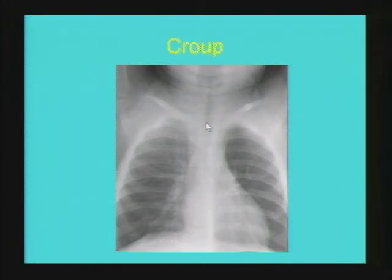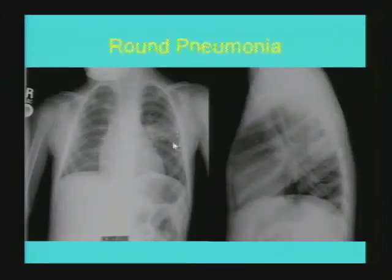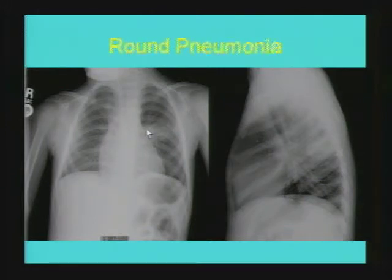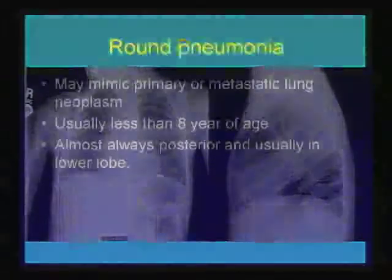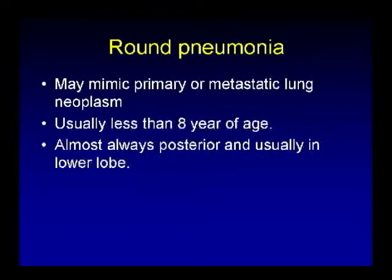The classical teaching is to get a lateral radiograph to rule out epiglottitis; however, the clinical scenario, age group, and incidence are much different in both etiologies. A specific pediatric pulmonary condition is round pneumonia, seen in children less than 8 years where there is inadequate development of the collateral air drift mechanism, resulting in very focal consolidations without air bronchogram. It is typically in the lower lobes and posterior, and can be confused with metastatic or primary lung neoplasm.